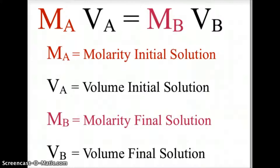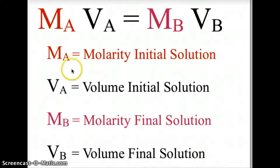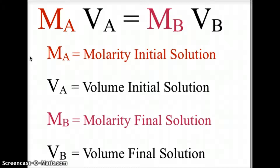That equation breaks down to MA being the molarity of the initial solution, VA being the volume of the initial solution, MB being the molarity of the final solution, and VB being the volume of the final solution.